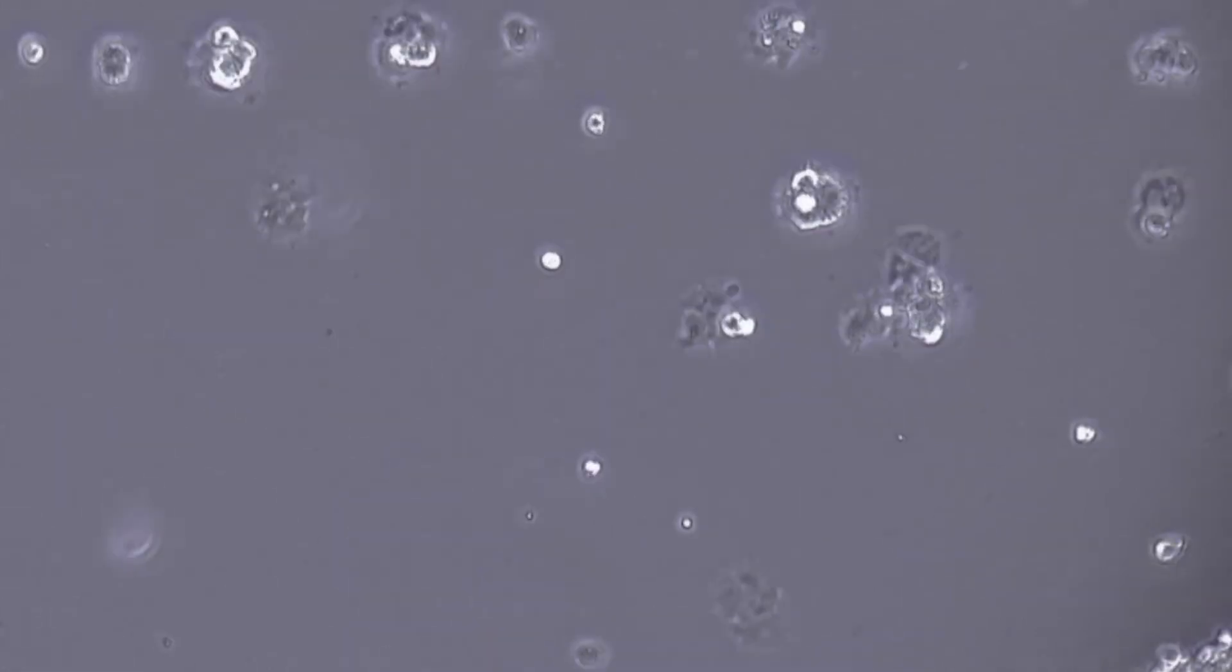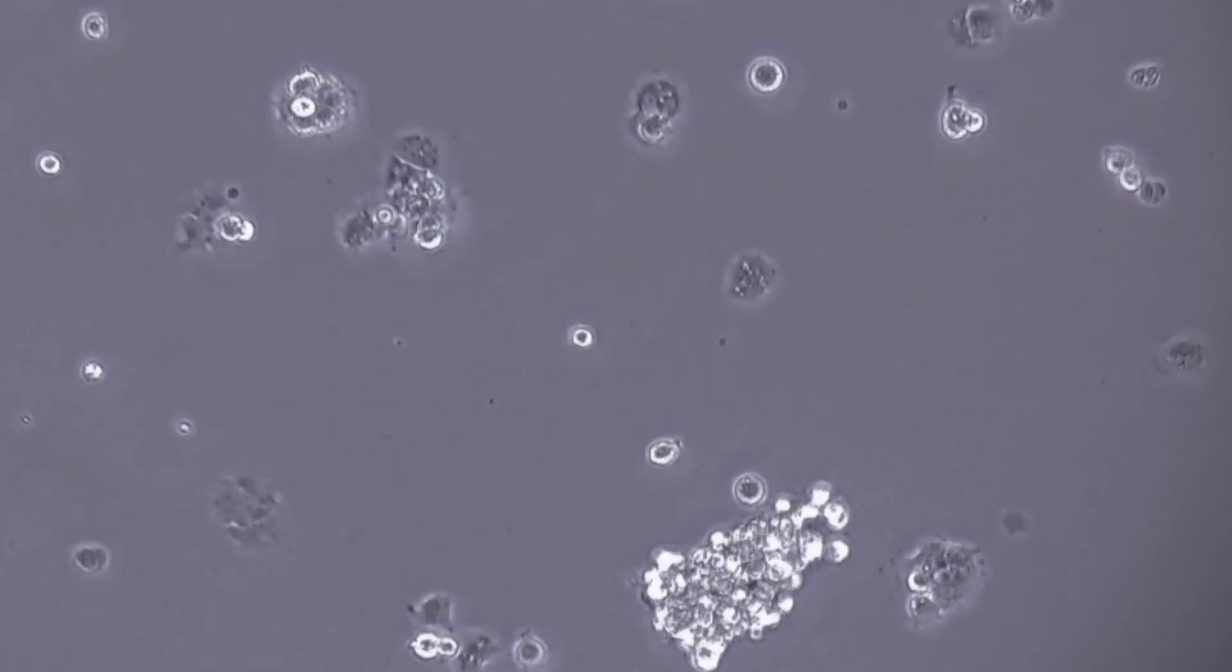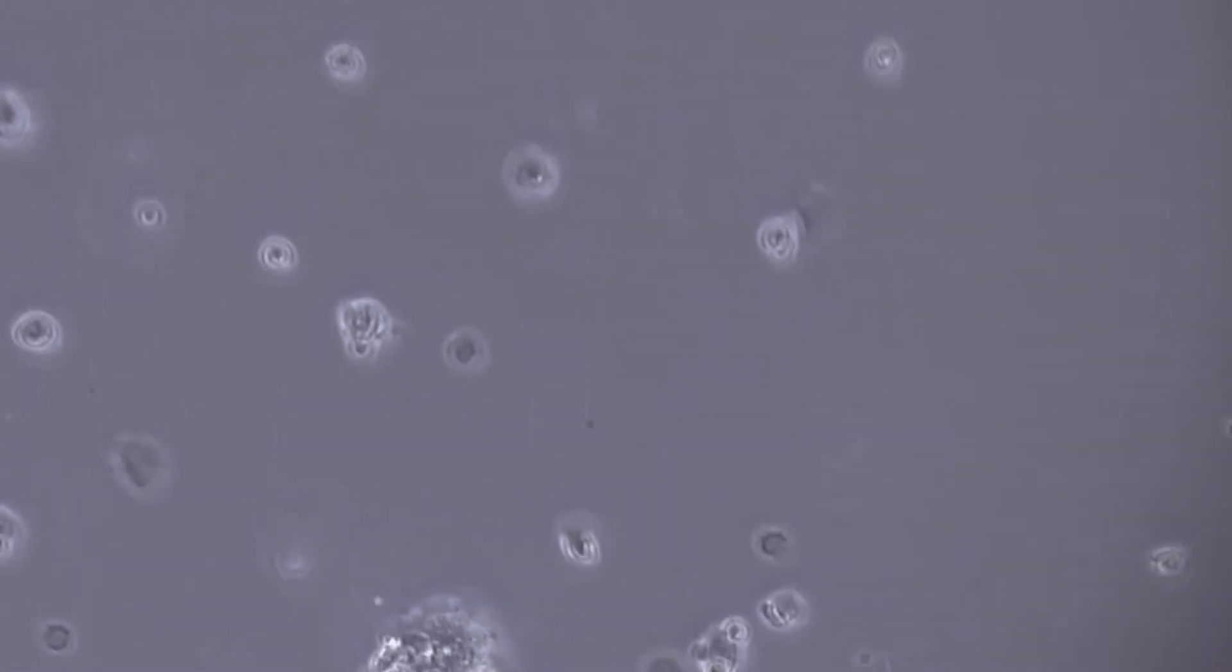After checking the cells, carefully transfer the dish to a 37 degrees Celsius incubator with 5% of CO2 and leave the cells undisturbed for about 24 hours.